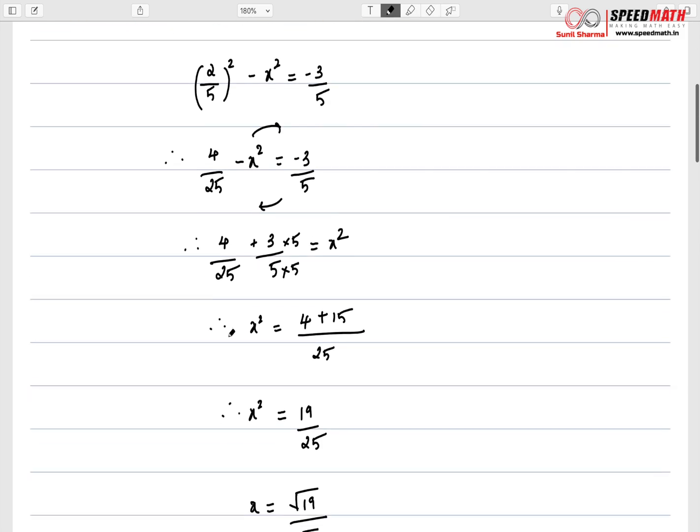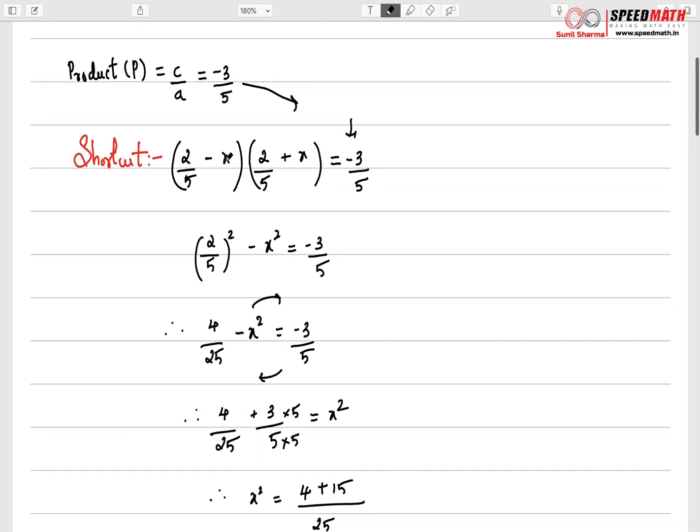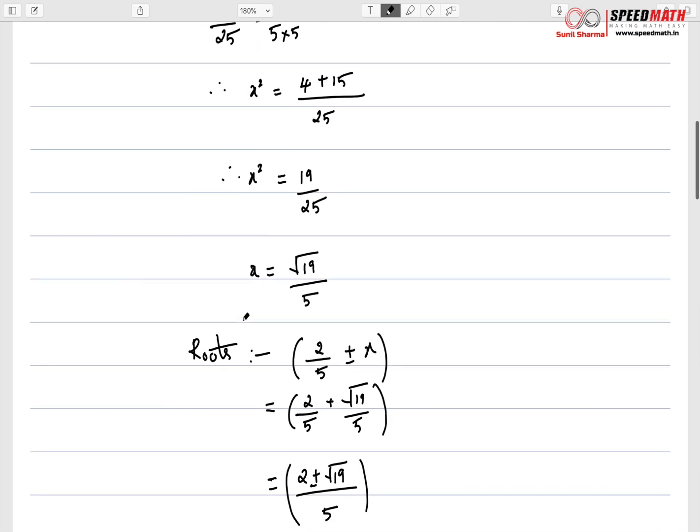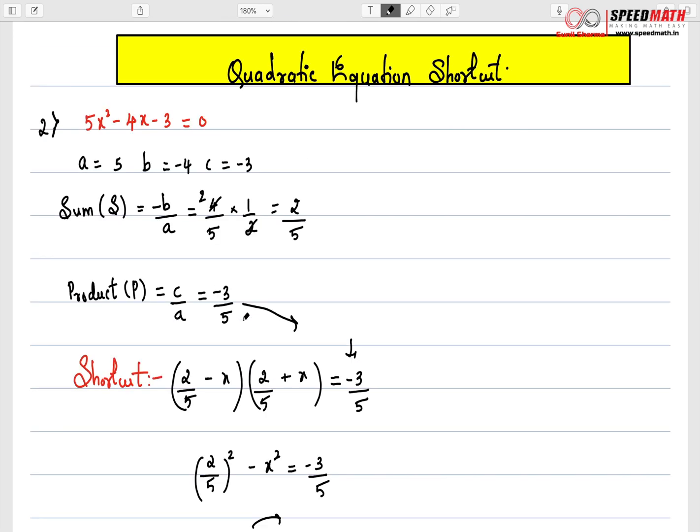And just simplify and you get the value of x and whatever is the value of x, simply substitute here. Those are the roots. It is so simple. Do try this method using any equation, especially those with perfect square method and formula method. Believe me, this is the fastest method. If you have enjoyed learning this shortcut, do subscribe to my channel and do hit the like button. And if you want more such shortcuts, I would like to hear from you all in the comment section and I'll make more such videos. Thank you very much for listening.